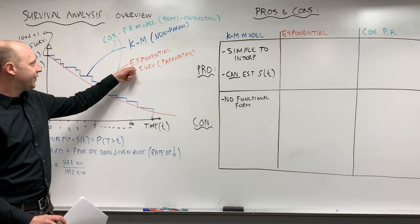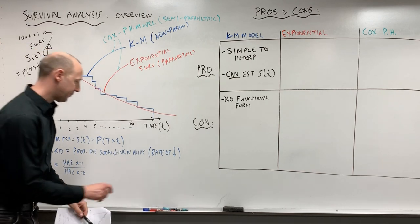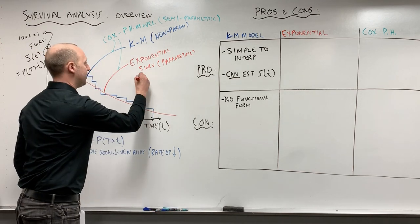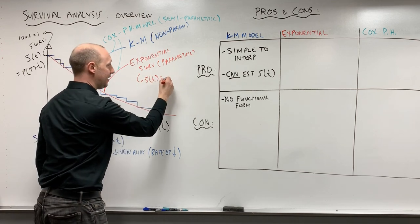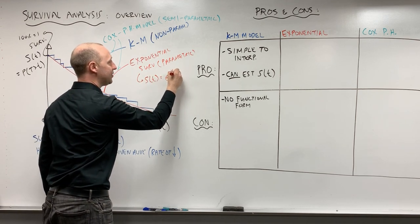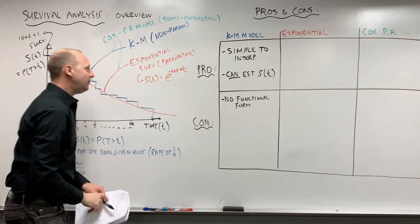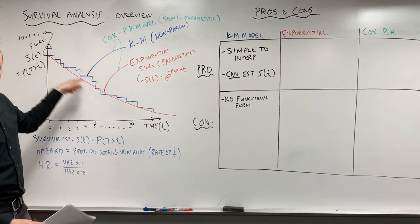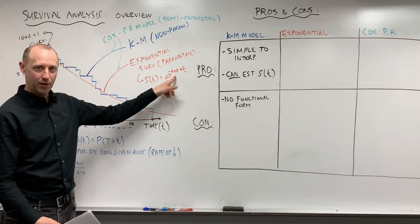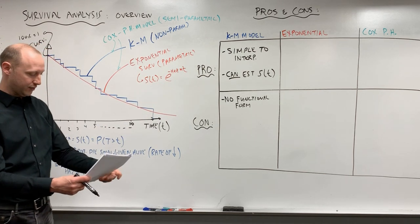Just to compare that, the exponential - if we use a negative exponential curve to describe the survival function, we're going to see, is e to the negative hazard times t. So if we estimate the hazard or the rate of decrease of the survival function, that one parameter can describe the shape of the survival function. So this does have a functional form.